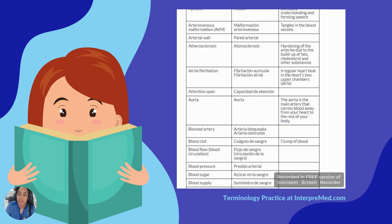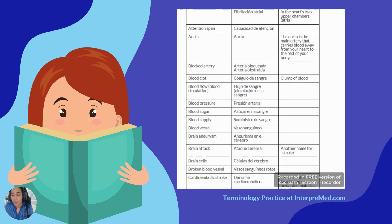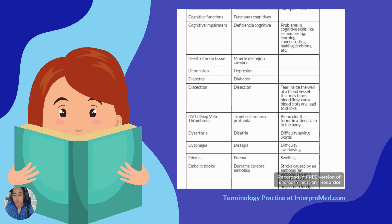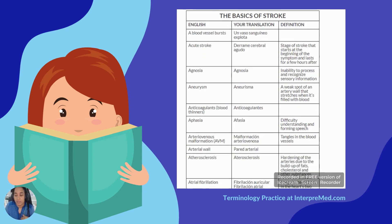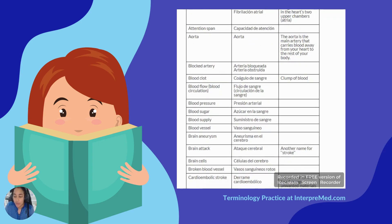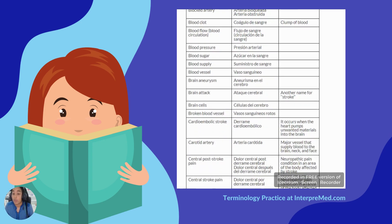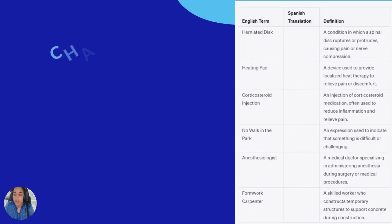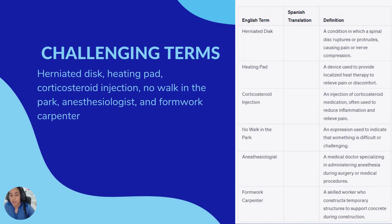Let's say you have finished your medical interpreting practice session and are ready to wrap up the meeting. Before setting a date to work on the next medical interpreter dialogue at InterpretMed, you want to save a list of medical terms that were especially challenging for you. If you like keeping digital or printed glossaries, this can be very helpful. Imagine the challenging terms were: herniated disk, heating pad, corticosteroid, and others. You can prompt ChatGPT to create a table using your specific parameters.